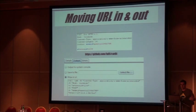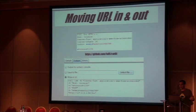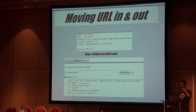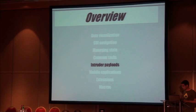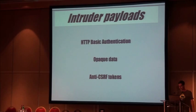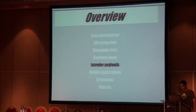Intruder payloads — I won't show every payload, just a few not very well known ones. Basic authentication, opaque data, etc. Basic authentication is the old way to authenticate to web applications — you have a header with the word 'Basic' followed by a Base64 string. If you press Ctrl+Shift+B, a popup opens showing the value and its decoded content.